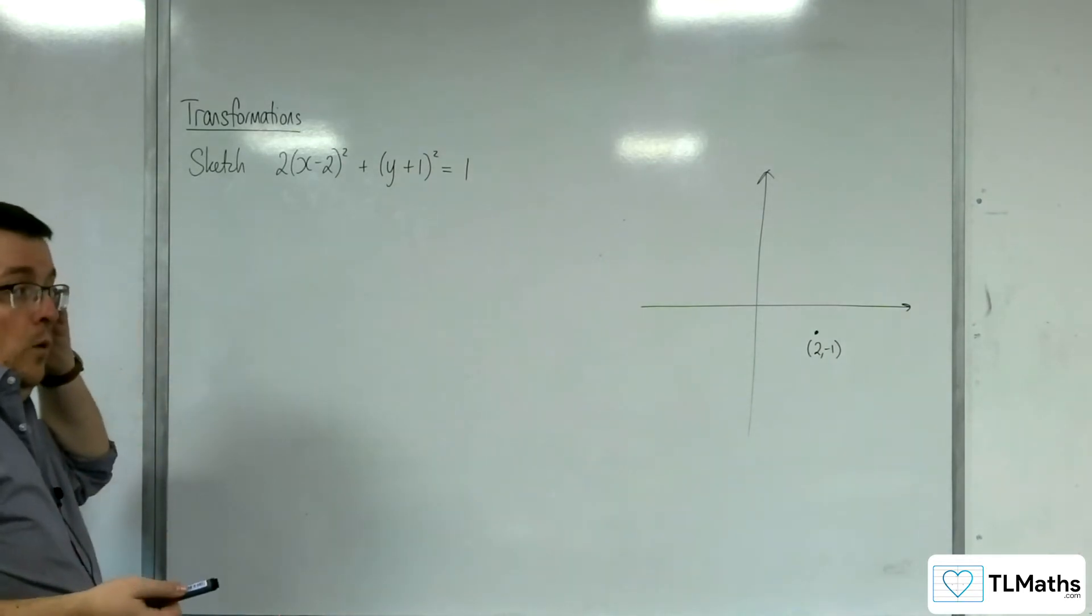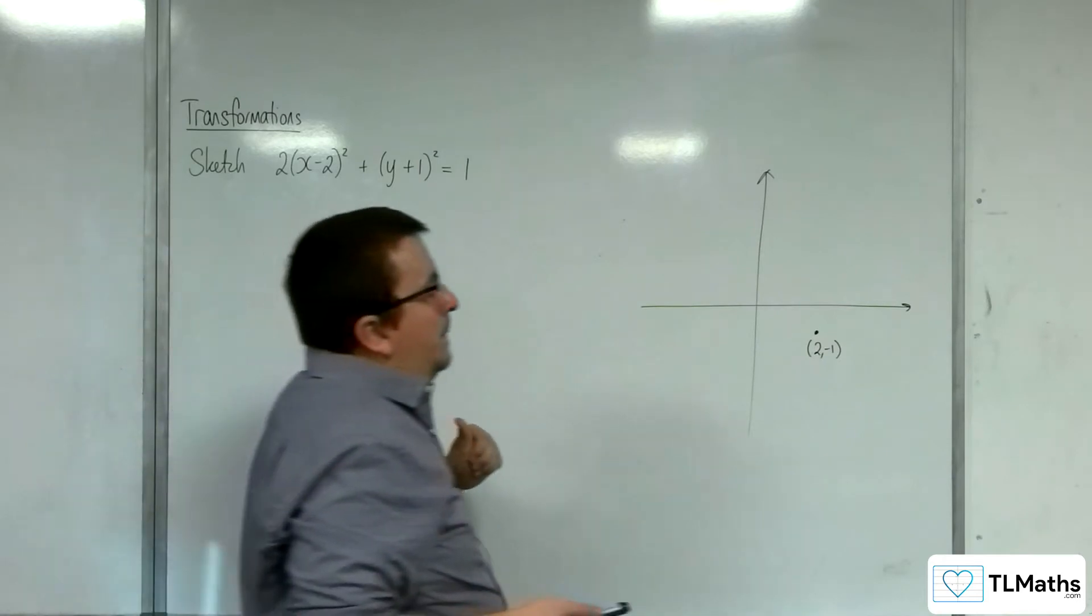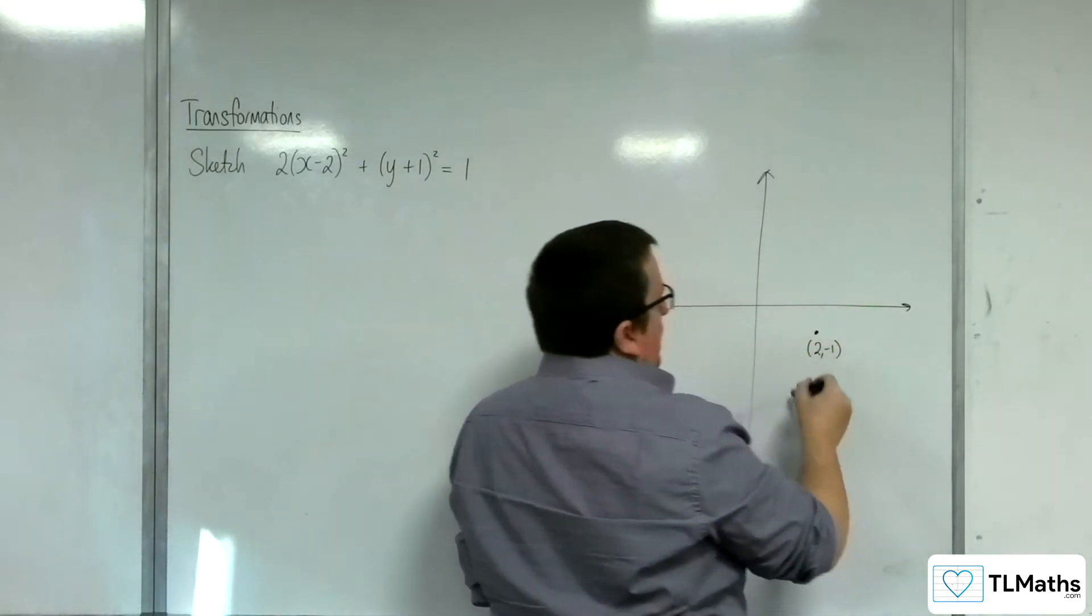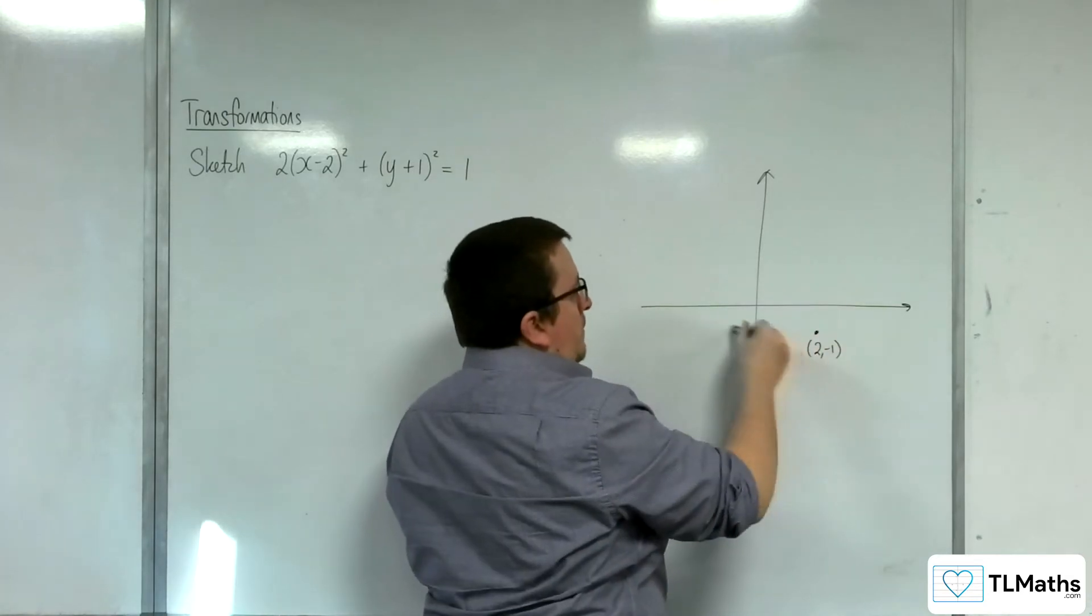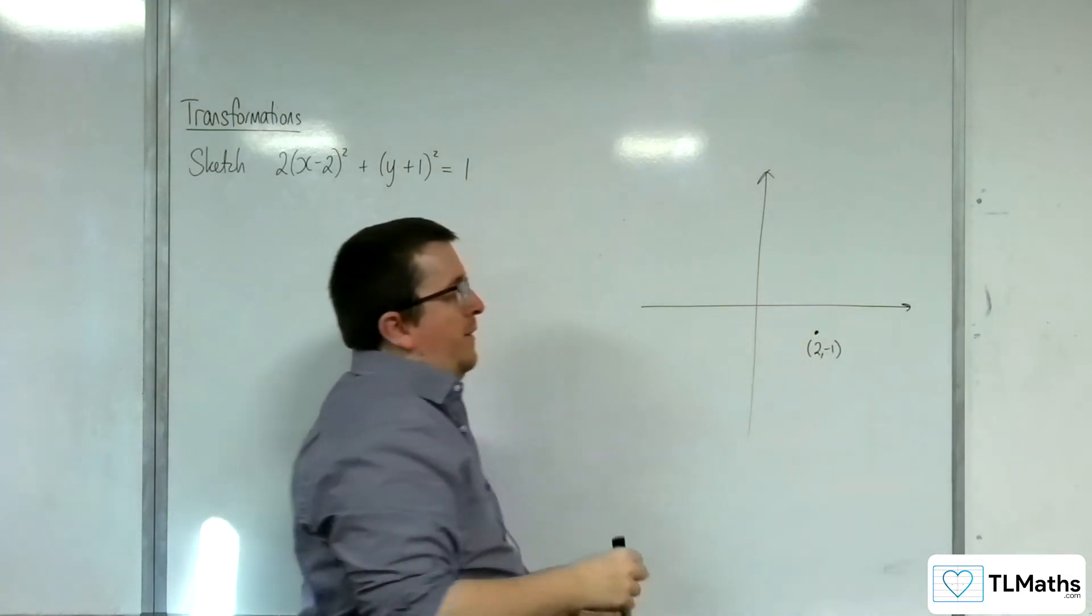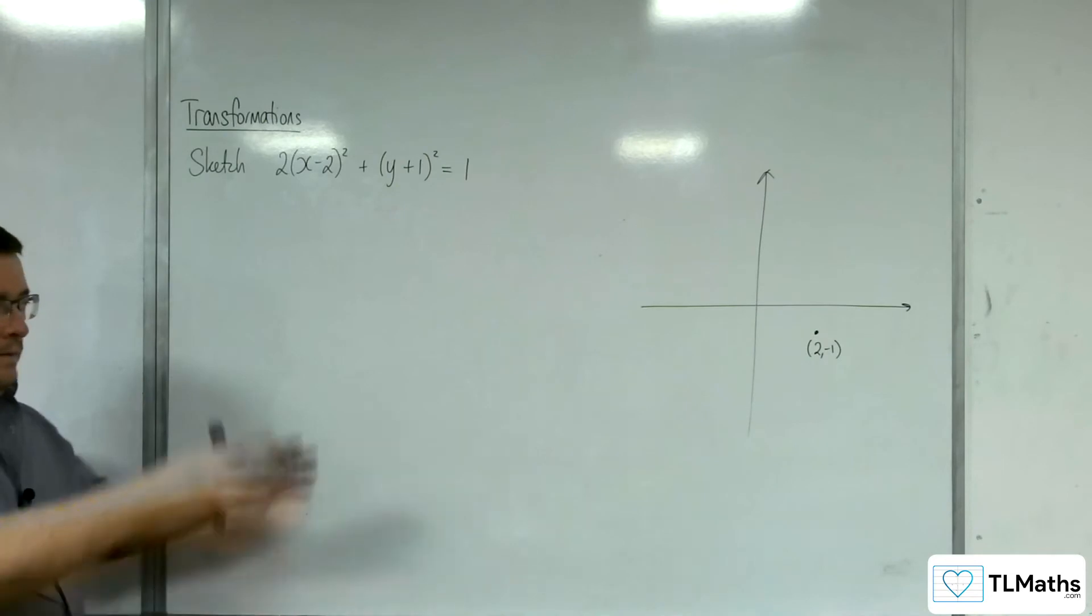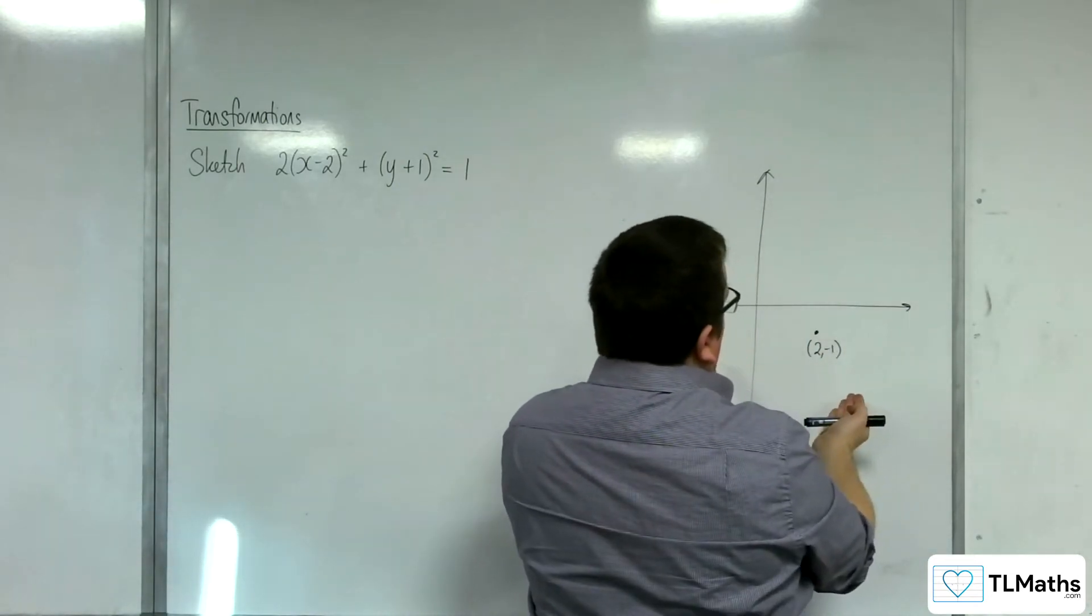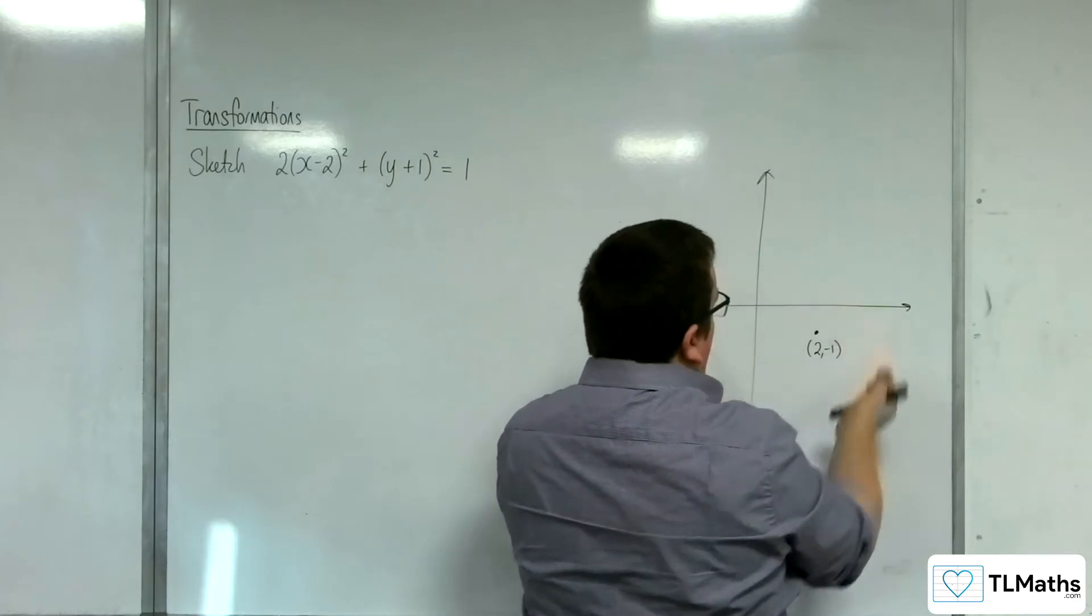Next up, I want to work out the maximum points—maximum, minimum, maximum, minimum, or either way around—but effectively, the edges of where my ellipse is going to be.